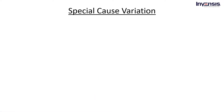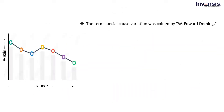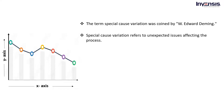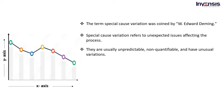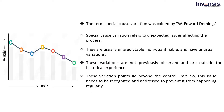In special cause variation, the variation points lie beyond the control limit. The term was coined by W. Edwards Deming. Special cause variation refers to unexpected issues affecting the process — they are usually unpredictable, non-quantifiable, and have unusual variations not previously observed and outside historical experience. If you encounter these variations, it helps you analyze what went wrong and how it can be resolved. These variations are due to defects in the system and can be rectified by making necessary changes to components, processes, and techniques. On the control chart, these variation points lie beyond the control limit and must be recognized and addressed to prevent recurrence.